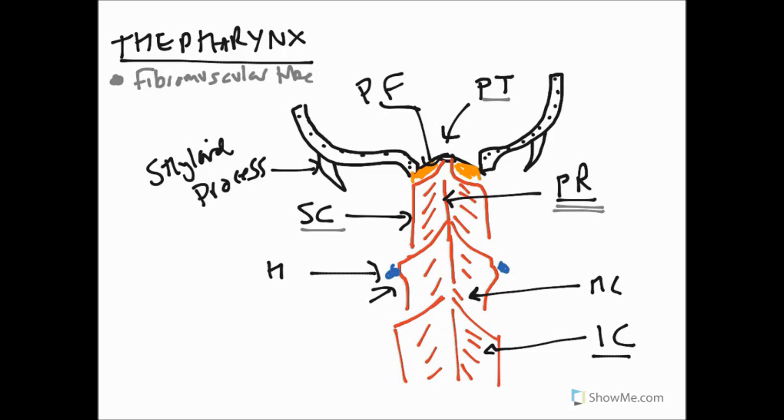So these are our constrictor muscles. They're stacked together and they interdigitate and they all have the joint function of constriction of the pharynx. The innervation is vagus nerve, technically through the cranial accessory through what we call the pharyngeal plexus. The pharyngeal plexus is either glossopharyngeal, vagus, cranial accessory contribution to vagus, or sympathetics.